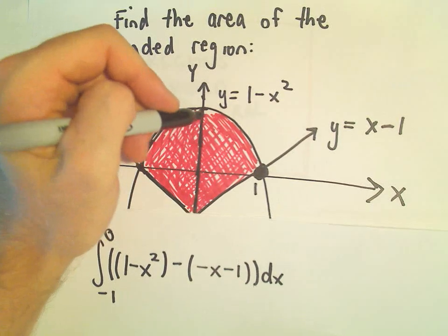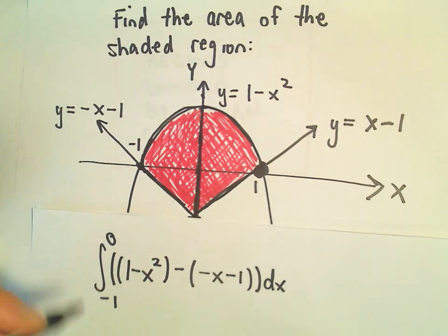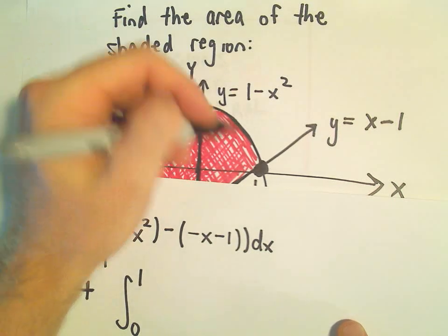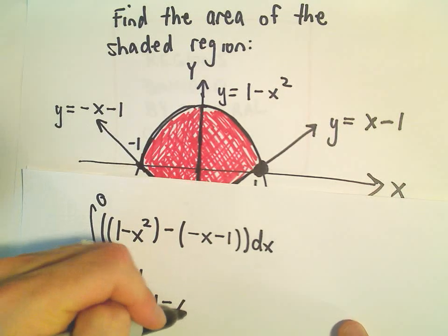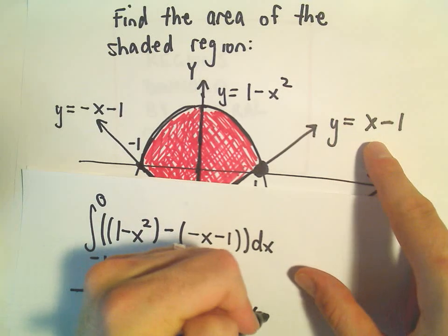To get the opposite, the mirror image here, we would have to add on the integral from 0 to positive 1. Again, it's still the function 1 minus x squared, and then the function on the bottom will be x minus 1.